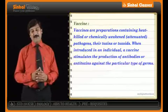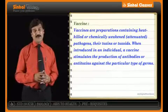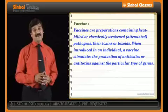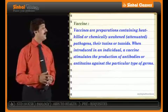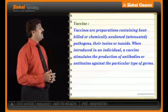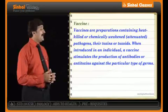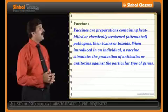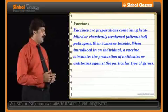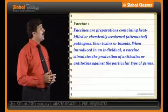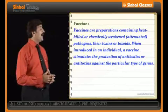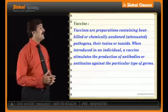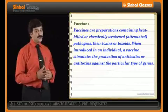We have a recap of the word vaccine on the monitor. Vaccines are preparations containing heat-killed or chemically weakened pathogens, their toxin or toxoids. When introduced in an individual, a vaccine stimulates the production of antibodies or anti-toxins against the particular type of germs.